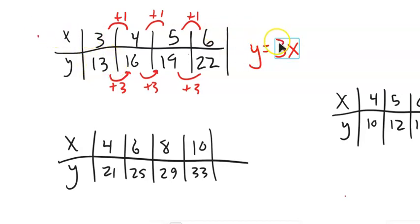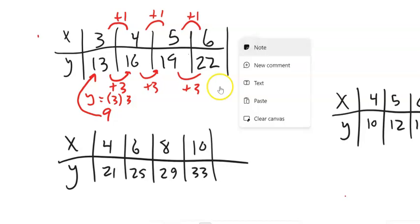So let me plug in 3. So I have Y equals 3 times 3. And if I leave it like that, I'm only at 9. But now the question is, how far off am I? I got 9, but I want 13. So I could add 4 to this.